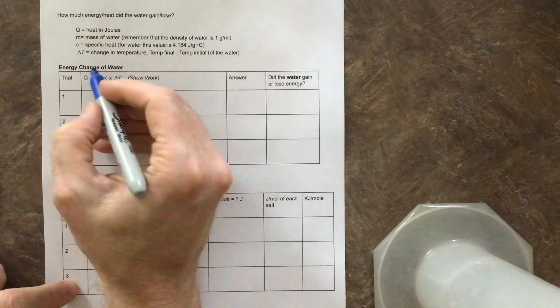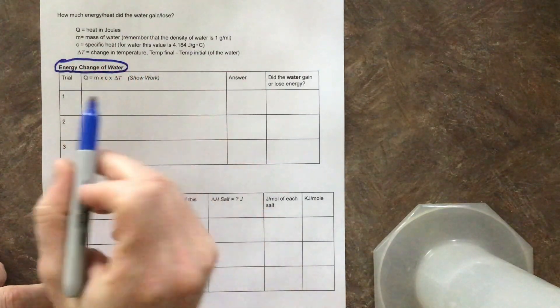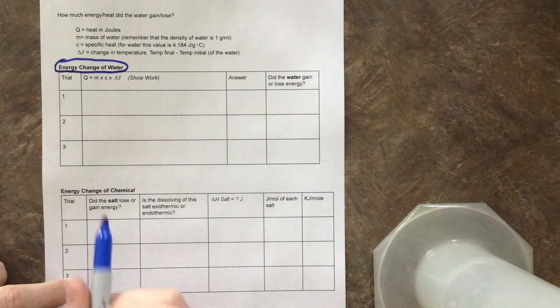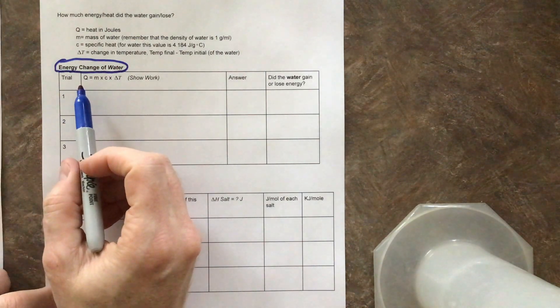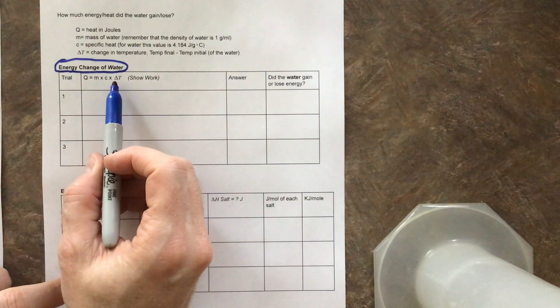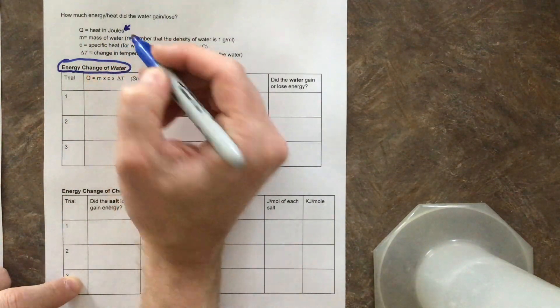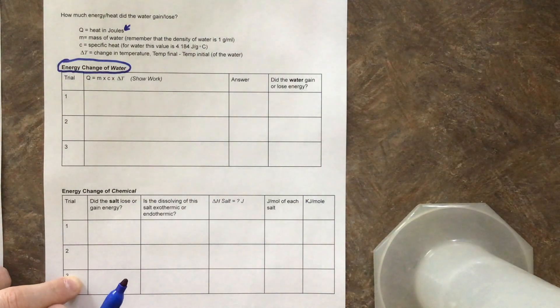We are trying to figure out the energy change of water. And you're like, wait a second, I thought we were doing salt. We first need to figure out water. So we've got this formula. This formula we can look up in a book. It says Q equals M times C times ΔT. Now the Q we look up here, that's going to be the heat in joules. We're trying to calculate how many joules did the water gain or lose.